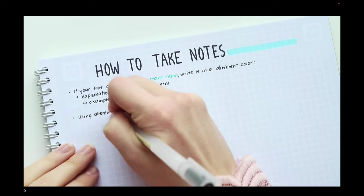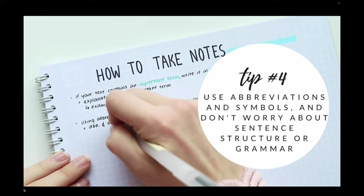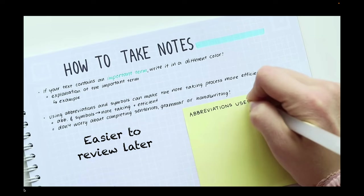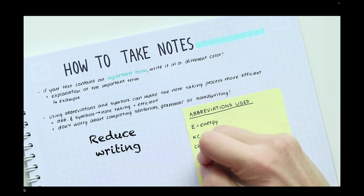Another key technique is to use symbols, abbreviations, and shorthand to make your notes more concise. This will save you time while you're taking notes and it will also make it easier to review the information later. By using these symbols, you can reduce the amount of writing you have to do while still capturing the main points.